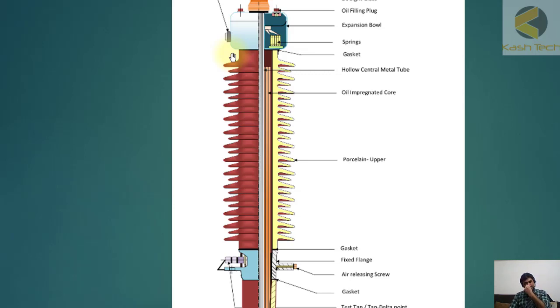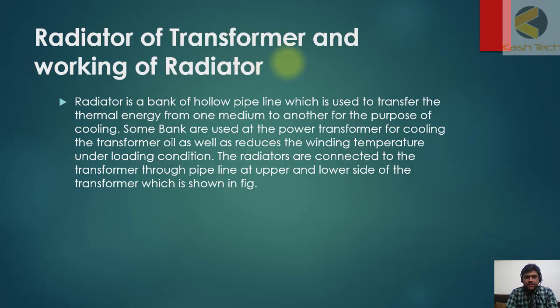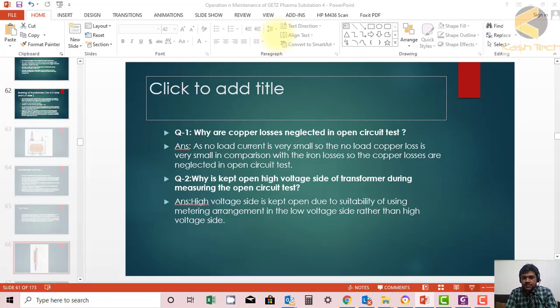If the creepage distance is less, with the passage of time the chances of insulation failures are more. Dust will be accumulated, moisture, and maybe salt. In order to decrease these chances, one option is to increase the length of the bushing which is expensive; another option is to add these grooves to increase the creepage distance. This was a complete lecture. Thank you very much.